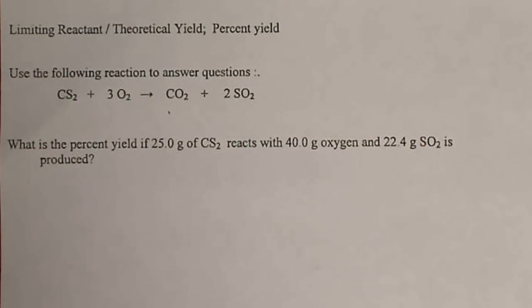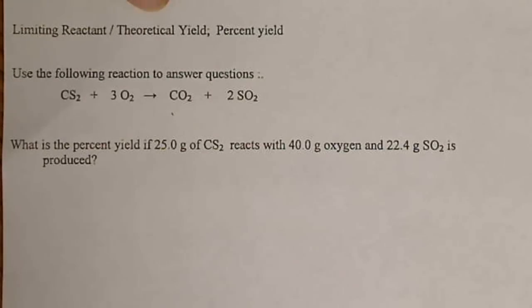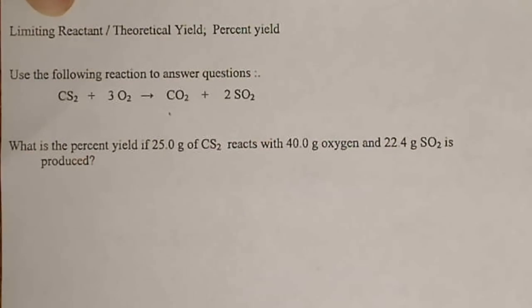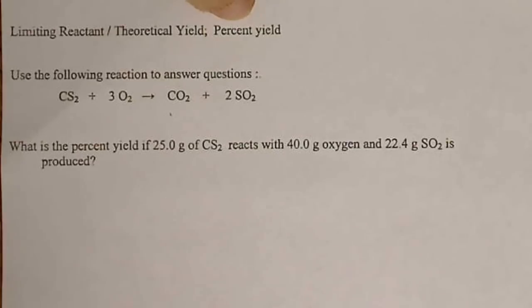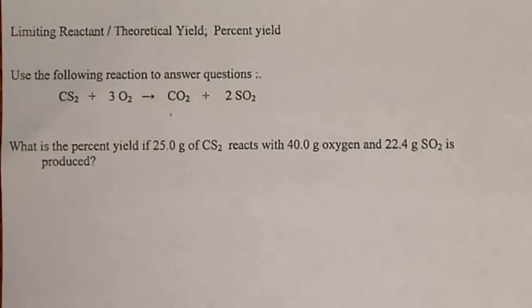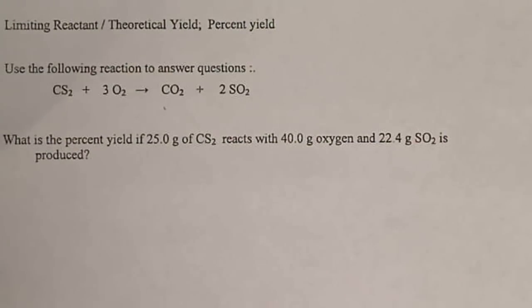We're going to use the following balanced chemical equation to calculate a theoretical yield. Once we know the theoretical yield, we are going to know what the limiting reactant is. Then we will also calculate the percent yield because we're going to see that an actual yield has been given.